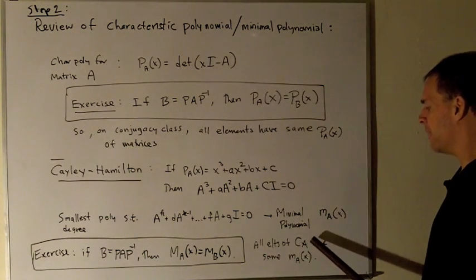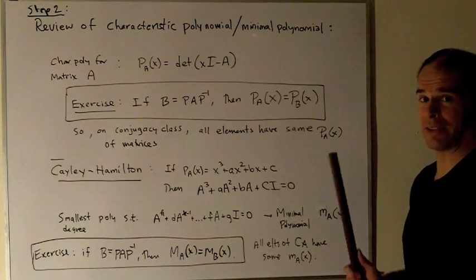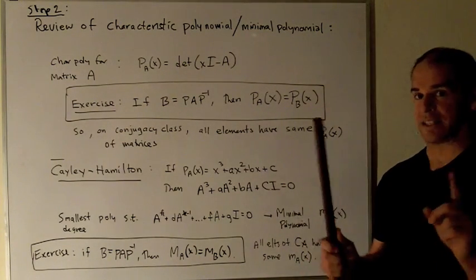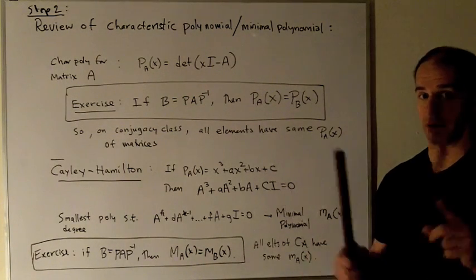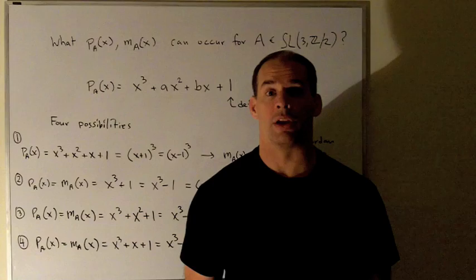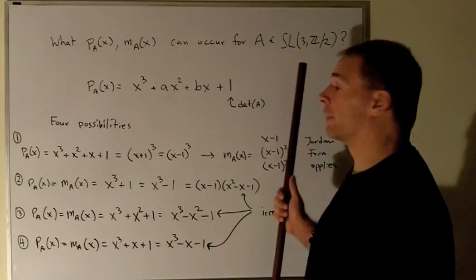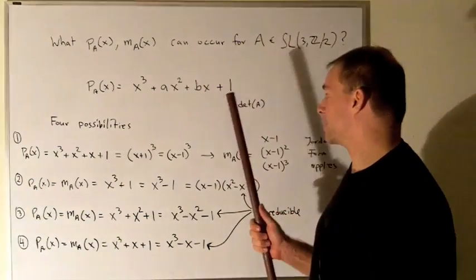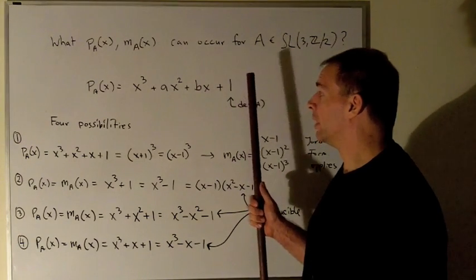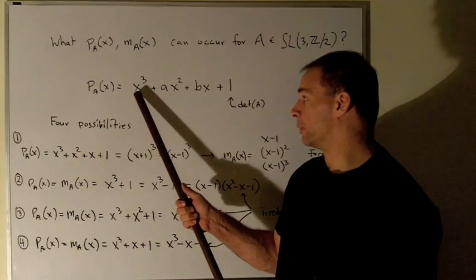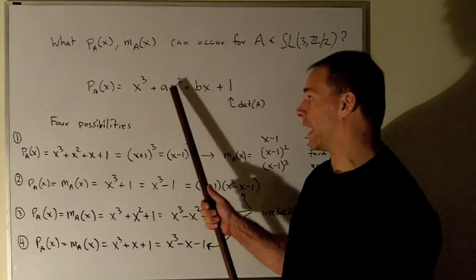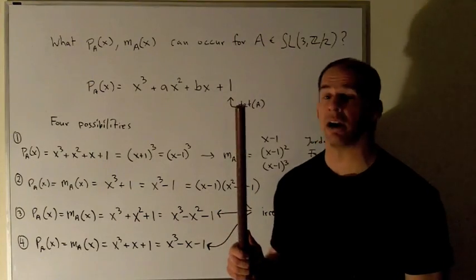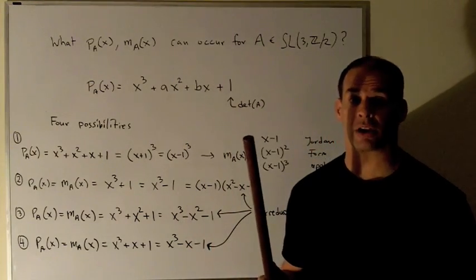Again, if I take a look at the conjugacy class of A, every element inside of that conjugacy class will have the same minimal polynomial. So that way I can use the minimal polynomial to tell whether two conjugacy classes are not the same. Okay, if they have different minimal polynomials, then I know there's no overlap between those two sets. What are the characteristic polynomials that can occur for an A in SL(3,Z2)? Since we're in SL(3,Z2), that means the determinant is equal to one, so that's going to fix the constant term by polynomial. Since we're looking at three by three matrices, the first term is always going to be x cubed. So the only degrees of freedom that we can have are going to be on the x squared and the x term. Since we're in Z2, that means we have two possibilities there, two possibilities there, and thus four possibilities for the characteristic polynomial of a given A.